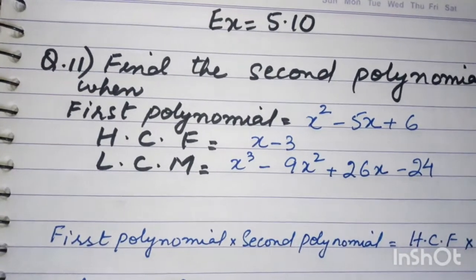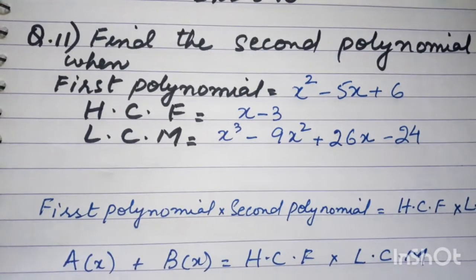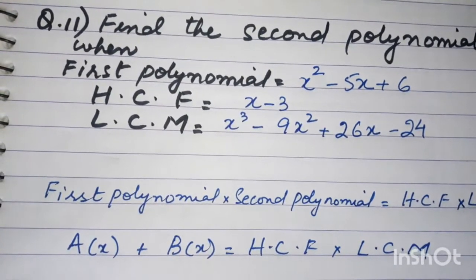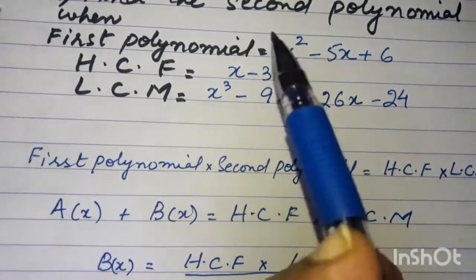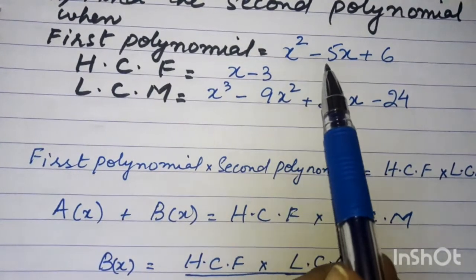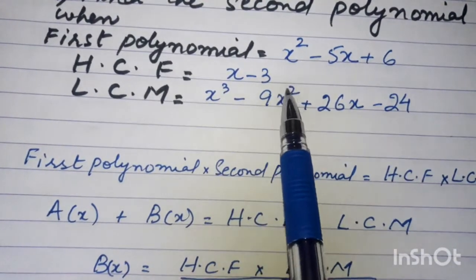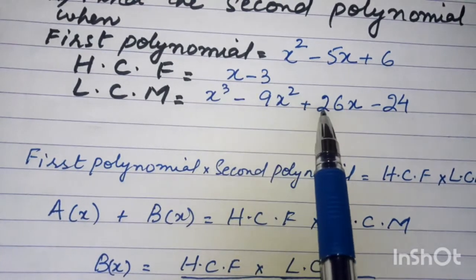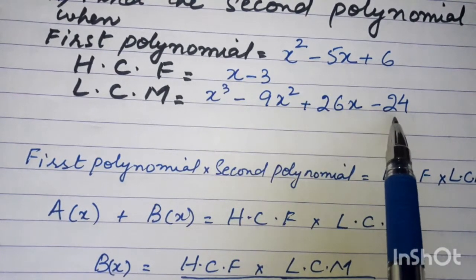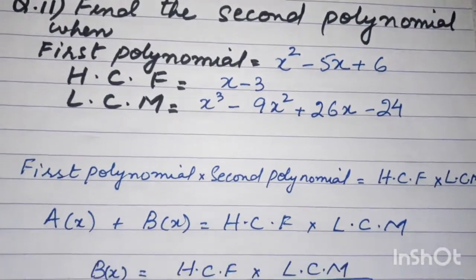Students, this is the solution to question number 11 of exercise 5.10. We are given the first polynomial as x squared minus 5x plus 6, the HCF is x minus 3, and the LCM is x cubed minus 9x squared plus 26x minus 24. We have to find out the second polynomial.